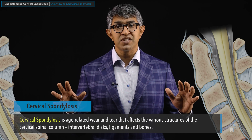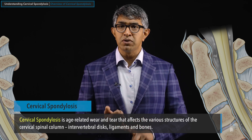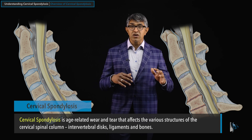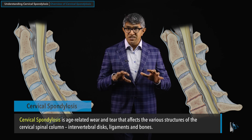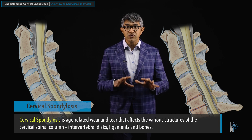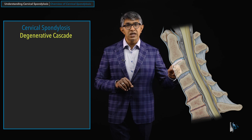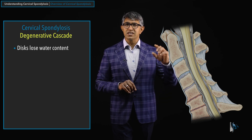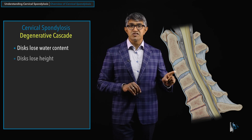At a high level, cervical spondylosis is age-related wear and tear that affects all the different structures of the cervical spine — the bones, the discs, and the ligaments. As those wear out over time, they can cause pressure on the nerves and the spinal cord, causing a variety of symptoms we'll discuss in the next chapter. In this chapter, we're primarily going to talk about the structural features or structural findings of cervical spondylosis. The degenerative cascade starts with healthy discs, which then lose their water content — losing their sponginess — and become less effective as a cushion between the two bones.